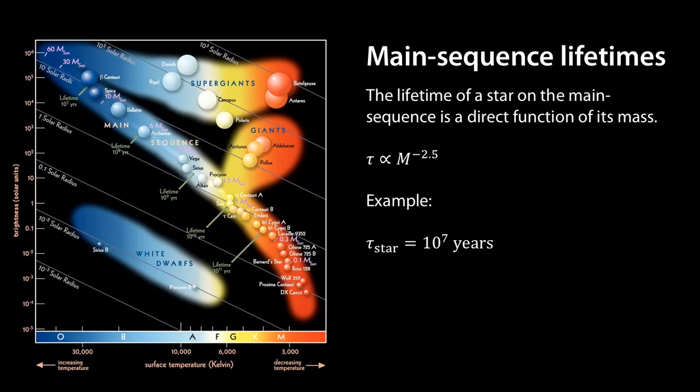So 10 to the 10 is 10 billion years, 10 to the 7 is a mere 10 million years. So that's a significant change in the lifespan.